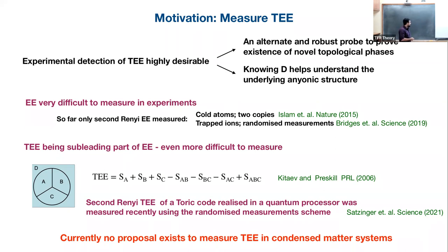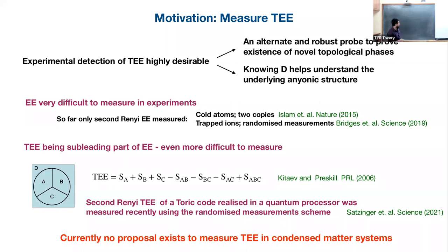In the original paper, they defined it by dividing into three parts A, B, C — and D is the embedding — to basically cancel the leading area-law part by taking proper combinations. So there's A, B, C, and the combination S_A + S_C - S_B - S_D allows you to cancel the boundary-law term. Each of them is the total entanglement entropy of the individual subsystem. And there was a remarkable recent experiment which measured this topological entanglement entropy on a toric code — in a similar corner setup. In the toric code, this was possible because the correlation length happens to be exactly zero, so they could do this with a few number of qubits.